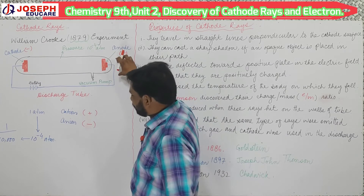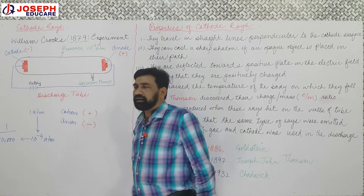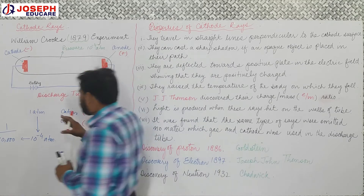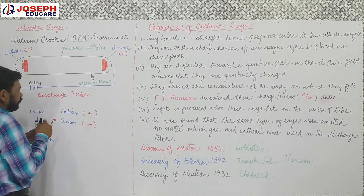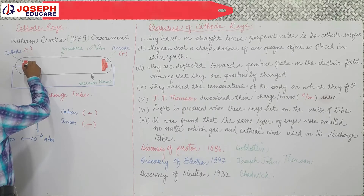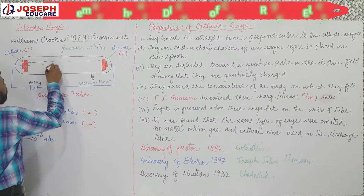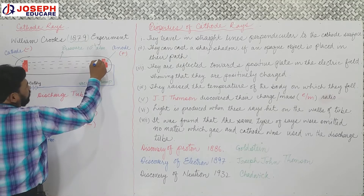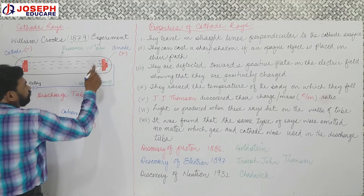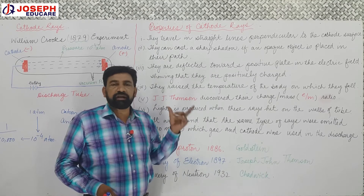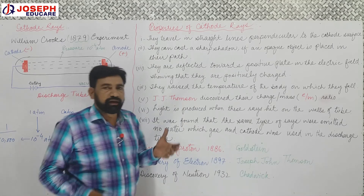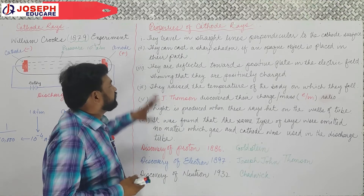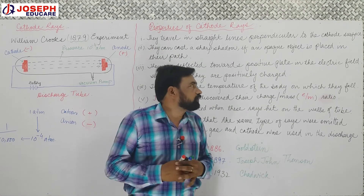Now students, what happened when electric current — high voltage — was passed through it? They observed that some rays were produced. These rays originated from the cathode and moved toward the anode. When the properties of these rays were studied in detail, some results were found. Let us discuss them one by one. Number one: these rays travel in straight lines perpendicular to the cathode surface.